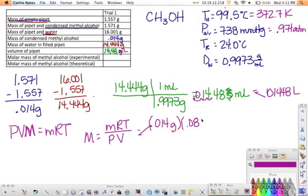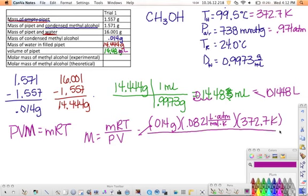So 0.014 grams times 0.0821 liters atmospheres per mole Kelvin, and the temperature was 372.7 Kelvin, and then divide that by our pressure, 0.971 atmospheres, divided by the volume of 0.01448 liters. We're canceling out some units here. The liters will cancel out, the atmospheres will cancel out, the Kelvin will cancel out, leaving us with grams per mole, which tells us the molar mass.